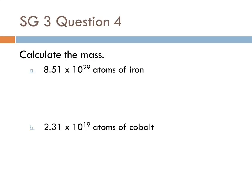So this one, question 4, is sort of the opposite of question 3. Calculate the mass and we're given number of atoms. So here we have atoms of iron.